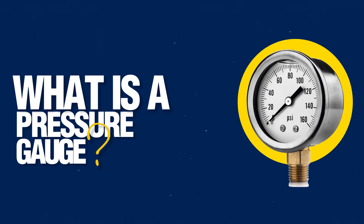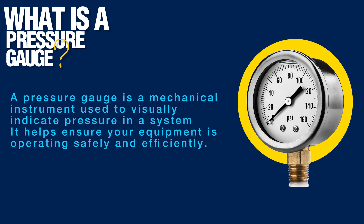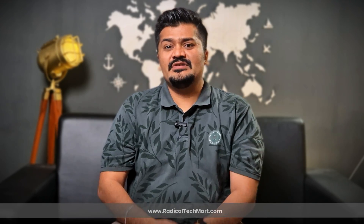First, let's start with what is a pressure gauge. A pressure gauge is a mechanical instrument used to visually indicate pressure in a system. It helps to ensure your equipment is operating safely and efficiently. It's found in industries like HVAC, manufacturing, chemical, oil and gas, and water treatment plants.